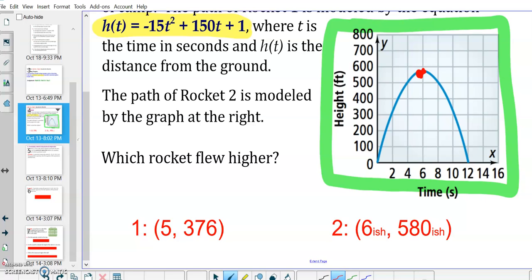So it looks like for rocket number 1, the yellow highlighted graph, if we do our computations, we're going to get 5, 376. And over here for the graph, this is just kind of ballpark, that's why that ish is there, for our vertex. So it's asking us which rocket flew higher. Well, that's going to be these y values. Because the x value represents the time, the y value represents the height. So clearly, rocket number 2 flew higher by about 200 feet.